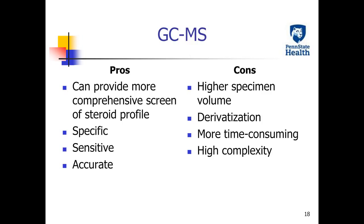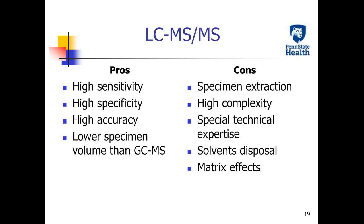GC mass spectrometry can provide multiple steroid screening in addition to testosterone. Its sensitivity, specificity, and accuracy are excellent. However, it usually needs more specimen volume and derivatization. Additionally, it is more time-consuming, and it is a method with high complexity.